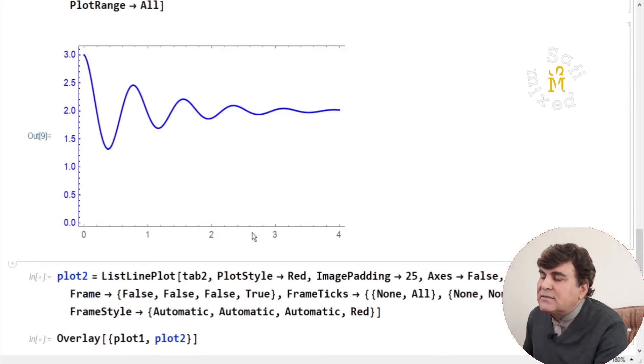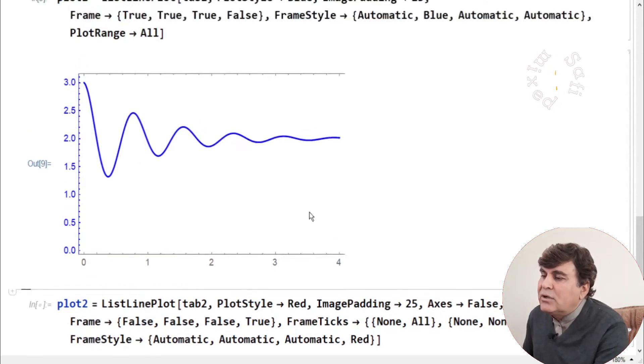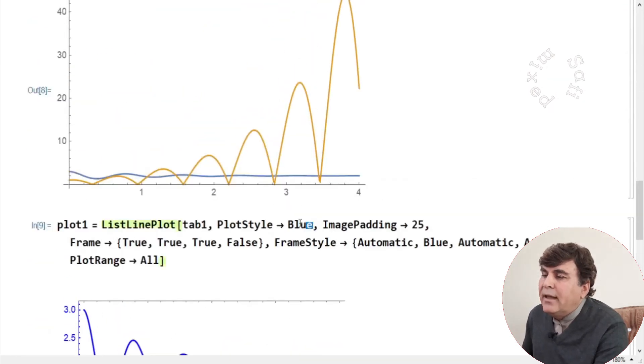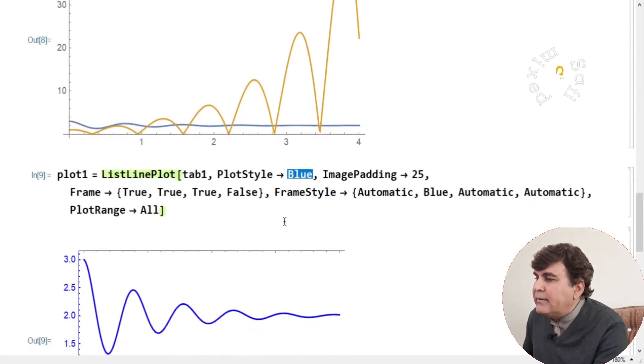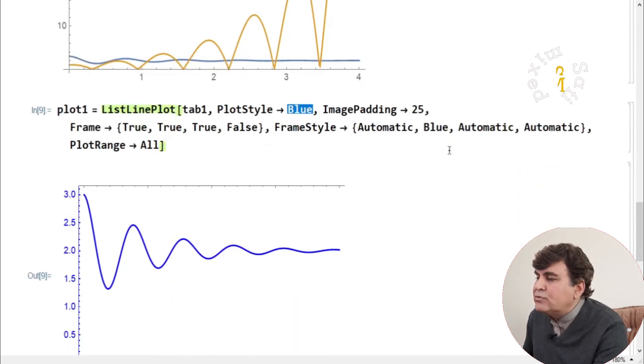If I run this command, I get this plot and you see we have x-axis below, x-axis upper, and y-axis with the values as shown, 0 to 3. It is this function that gives the blue color, and these ordinate values are blue because of this command in FrameStyle.